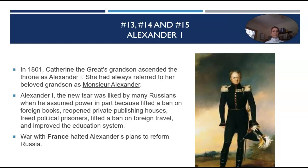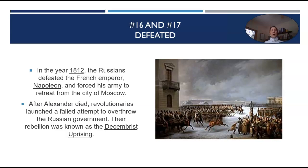Questions 16 and 17: Defeated. In the year 1812, the Russians defeated the French Emperor Napoleon and forced his army to retreat from the city of Moscow. After Alexander died, revolutionaries launched a failed attempt to overthrow the Russian government. Their rebellion was known as the Decembrist Uprising.